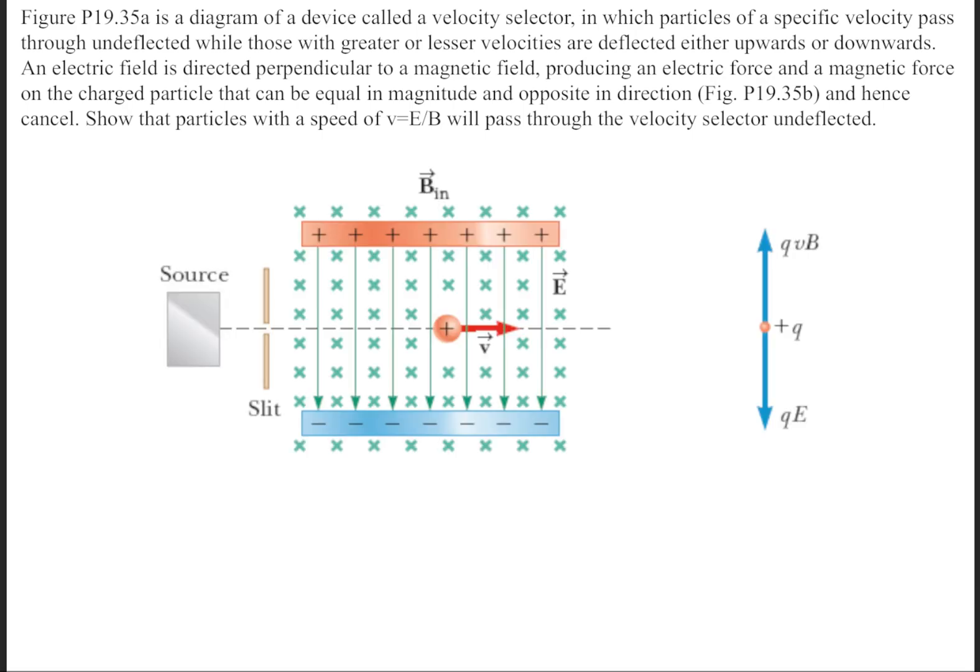Here you have a magnetic field going into the page, and you have the electric field going perpendicular to it. This allows it so that it travels in a straight line.